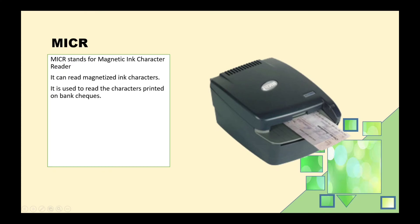The next input device is MICR, which stands for Magnetic Ink Character Reader. This device reads magnetized ink characters. It is commonly used in banking — the numbers printed on bank checks are printed using special ink. This ink contains iron particles, which allow the MICR device to read the characters magnetically.